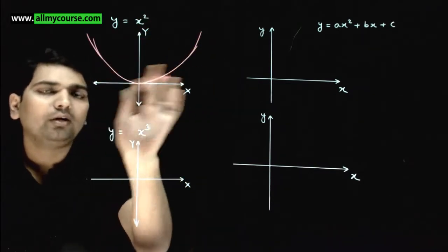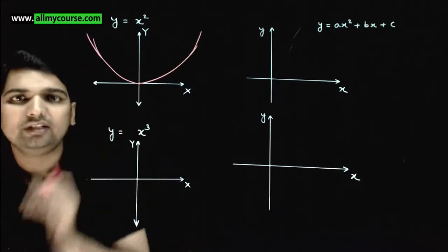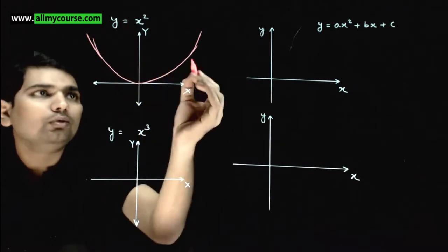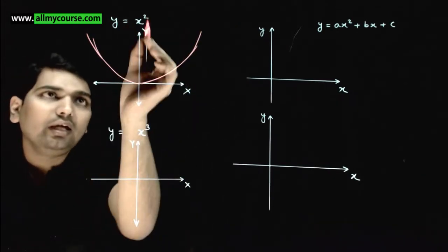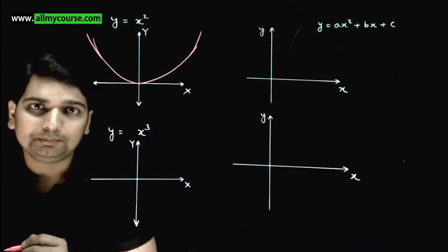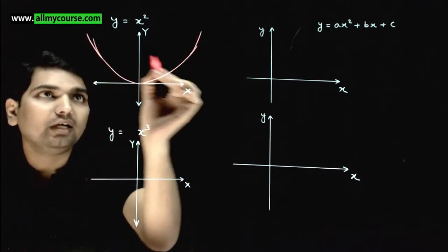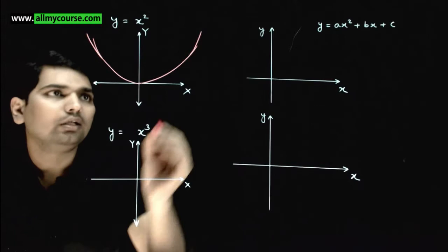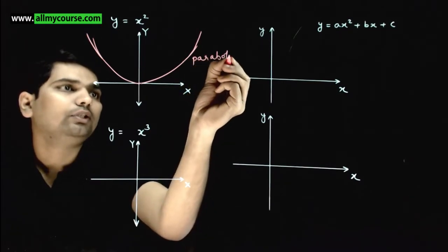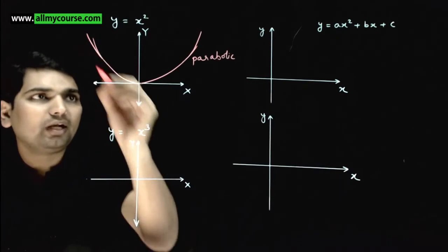Something like this. This will be symmetric about this axis - as it is on the right side, same on the left side. And at x equals plus infinity, y value will go towards infinity. At x equals minus infinity, y value will also go towards infinity. The shape that y equals x square will form is called parabolic shape. This will be a parabolic shape.